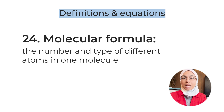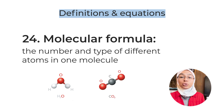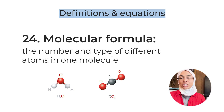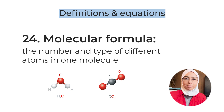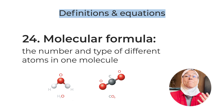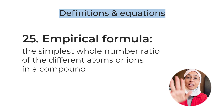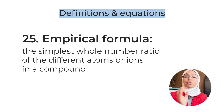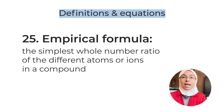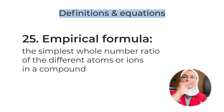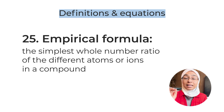Definition number twenty-four: molecular formula — shows the number and type of the different atoms in one molecule. For example, water is H₂O (two hydrogens and one oxygen) and carbon dioxide is CO₂ (one carbon and two oxygens). Definition number twenty-five: empirical formula — the simplest whole number ratio of the different atoms or ions in a compound. For example, the empirical formula of C₂H₄ is CH₂, simplifying the 2:4 ratio to 1:2.